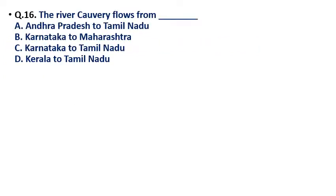Question 16: The river Kaveri flows from — (a) Andhra Pradesh to Tamil Nadu, (b) Karnataka to Maharashtra, (c) Karnataka to Tamil Nadu, (d) Kerala to Tamil Nadu? The correct answer is option C — the river Kaveri flows from Karnataka to Tamil Nadu.